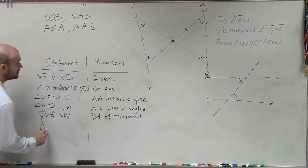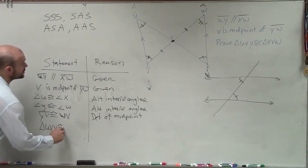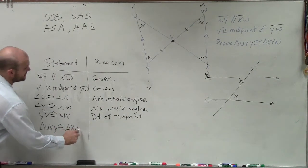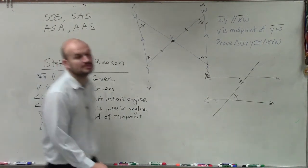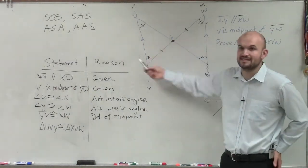So you say triangle UVY is congruent to triangle XVW. So Sierra, let's go and look at this. Do they have all the sides equal for both triangles?